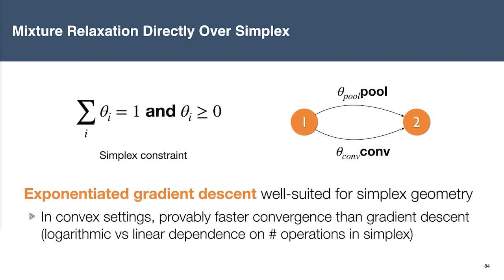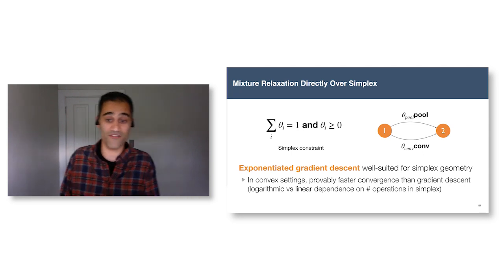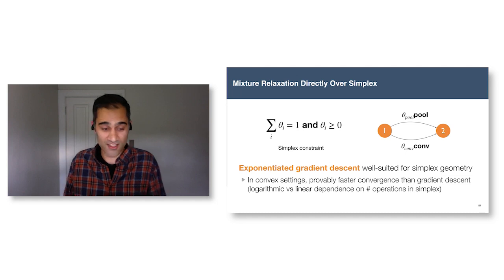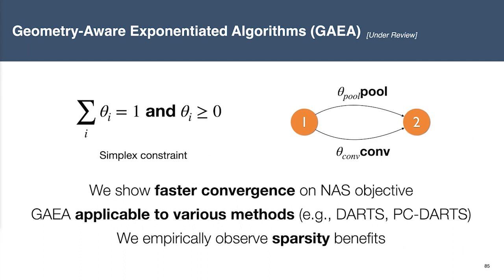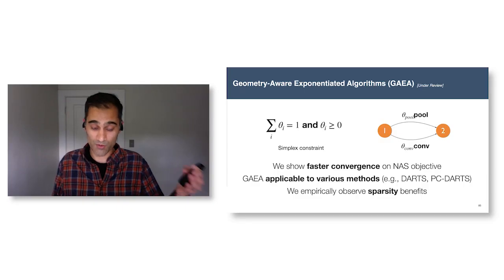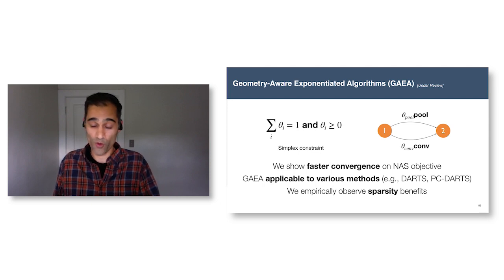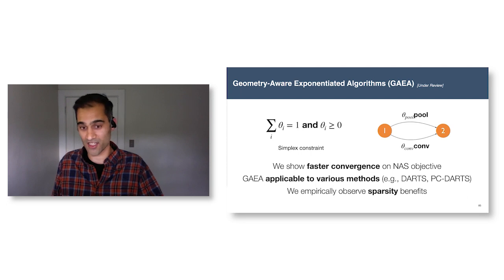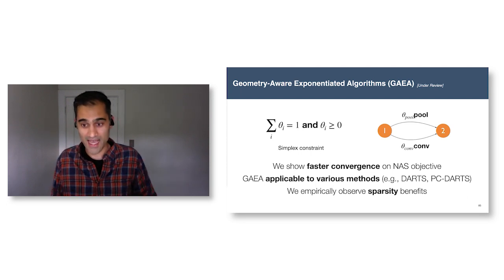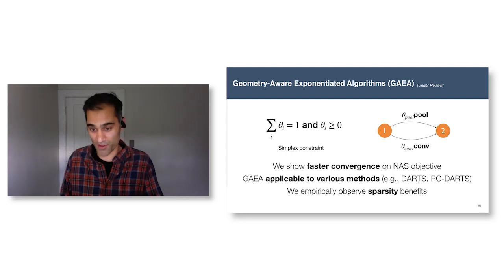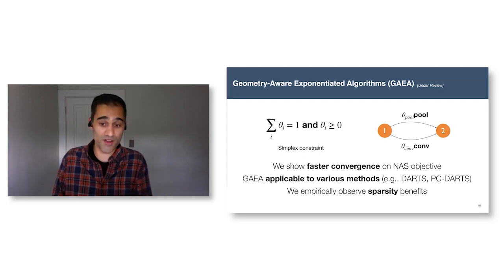It's known that exponentiated gradient descent is particularly well suited for simplex geometry. In convex settings it's provably faster than vanilla gradient descent, and in non-convex settings it's known to encourage sparser solutions. In the context of neural architecture search, we propose a family of methods called Gradient-Aware Exponentiated Algorithms, or GAEA, which generalizes convergence results from convex settings to probably show faster convergence. Our results also apply to methods like DARTS, providing the first general convergence results for those methods.